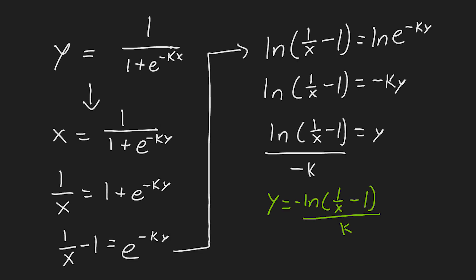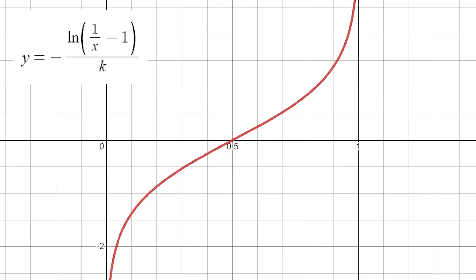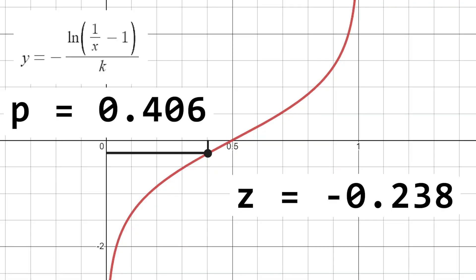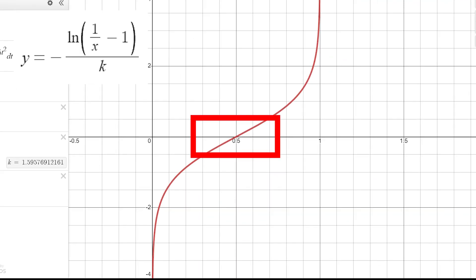The quantile function for our approximated CDF is the negative natural logarithm of 1 divided by x minus 1 all divided by k. So this means we can input a random probability and get a value that corresponds to it with the normal distribution. So we will have most of our values pretty close to zero, and pretty much nothing past negative 3 and positive 3.